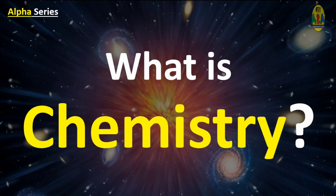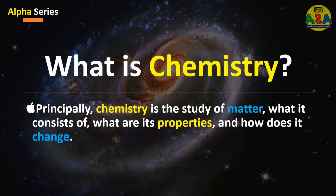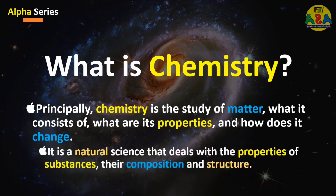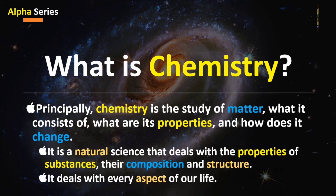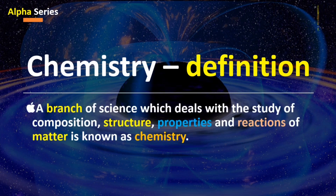What is chemistry? Chemistry is the study of matter — what it consists of, what are its properties, and how does it change. It is a natural science that deals with the properties of substances, their composition and structure. According to one definition, chemistry is a branch of science which deals with the study of composition, structure, properties and reactions of matter.